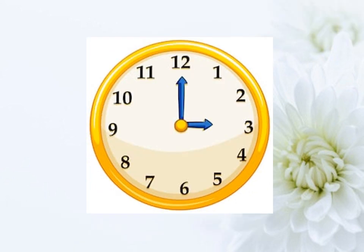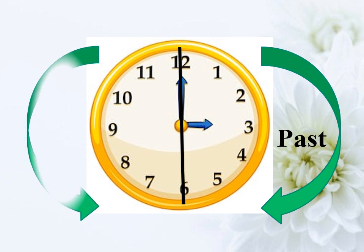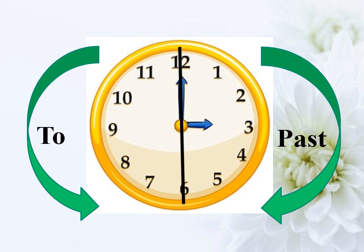Basically, the clock has two main parts. The first one is 'past' — past means it is a time that has gone. The second part of the clock is 'to' — 'to' represents the future, a time that is going to happen. So simply: from 12 to 6, that part is past; and from 6 to 12, that part is 'to'.